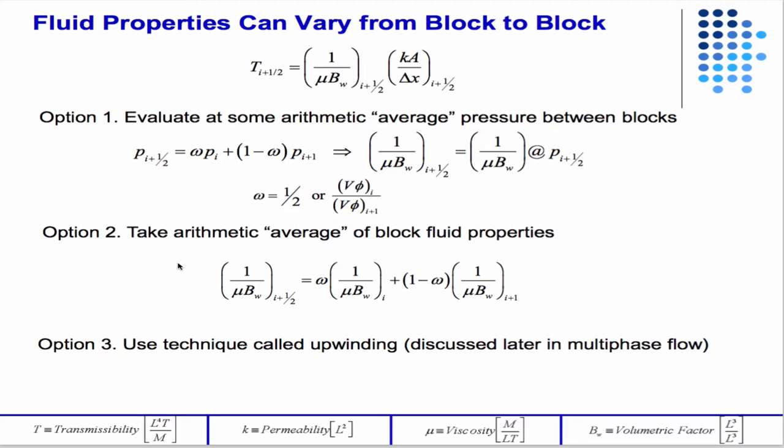Another thing you can do is just you can average the fluid properties themselves. So the difference here is here you're doing some effective weighting or averaging of the pressure and evaluating the fluid properties at that pressure. Here you're taking the fluid properties themselves at the pressures of the grid blocks and doing some interpolation on them to evaluate the i plus 1 half. And then later we're going to talk about upwinding when we talk about multiphase flow.